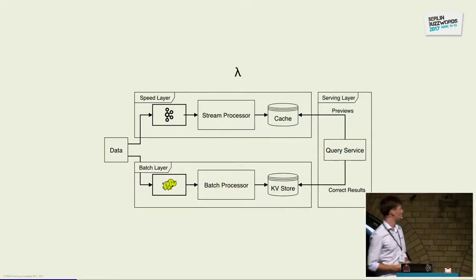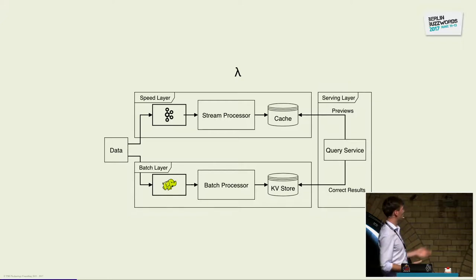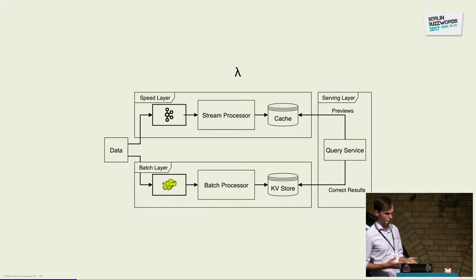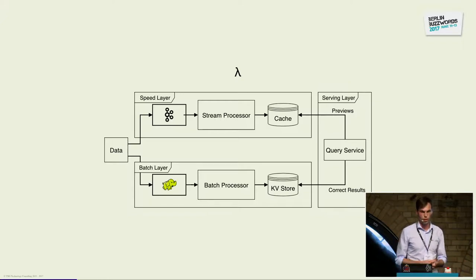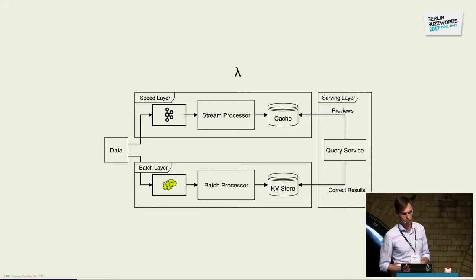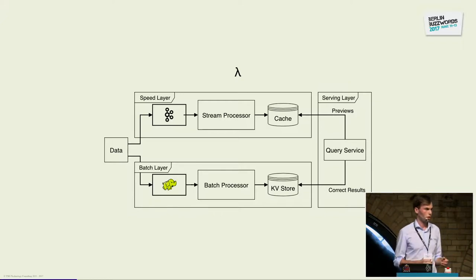I'm sure many of you will know this. So here you have two dual layers: a speed layer with a stream processor, for example Storm, but this delivers low latency results but can't really be trusted correctness-wise. And then you have a batch layer running MapReduce jobs once a day that really computes correct results to be trusted. One could see some problems with this kind of architecture. You have these separate systems that you need to develop for in different frameworks, and you have to operate the system separately.